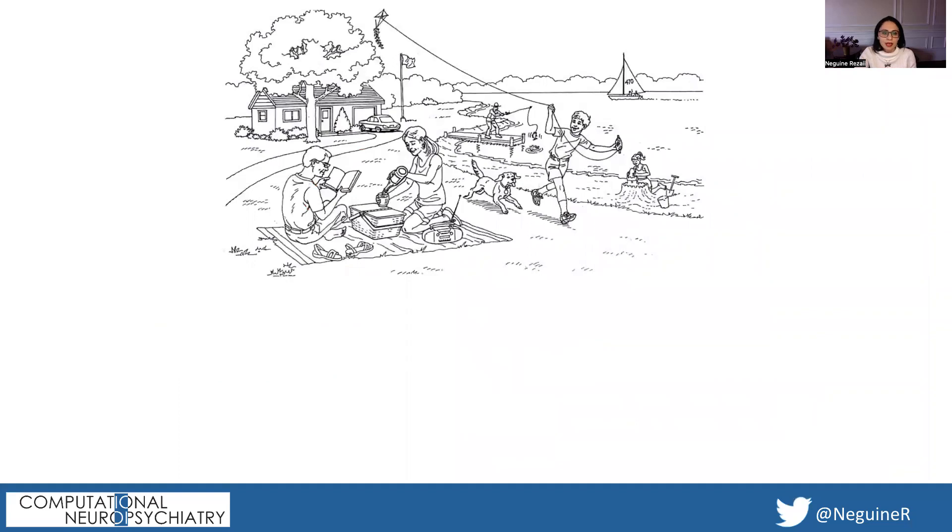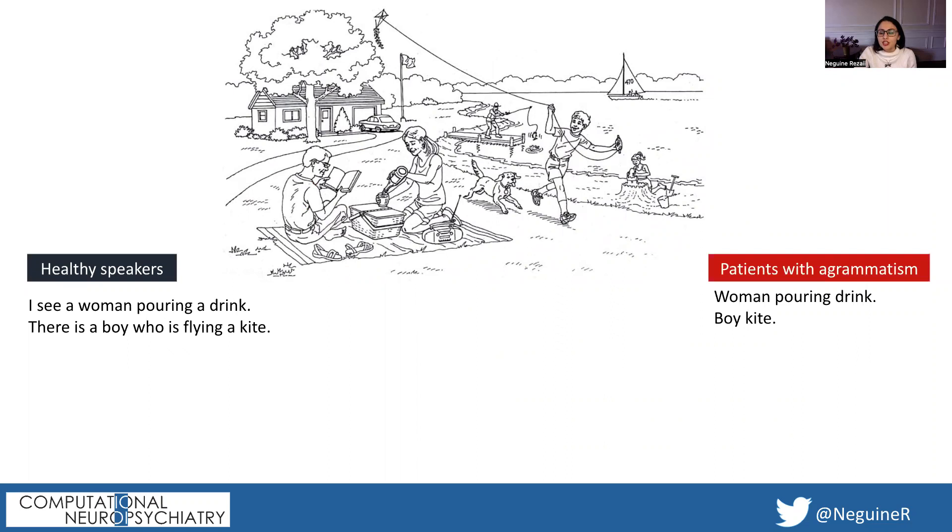When you ask a healthy individual to describe this picture, they might say, "I see a woman pouring a drink. There is a boy who is flying a kite." But patients with agrammatism might say, "woman pouring drink, boy kite."